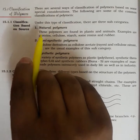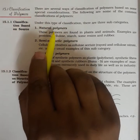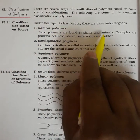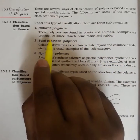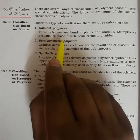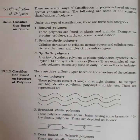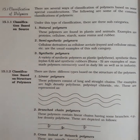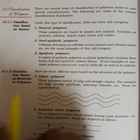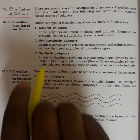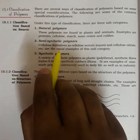Based on sources, polymers are divided into three types. Natural polymers are normally found in plants and animals. Examples include proteins, cellulose, starch, resins, and rubbers. Natural polymers are normally biodegradable in nature — they can be decomposed easily and do not cause environmental issues.